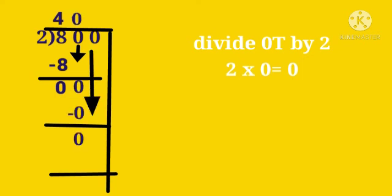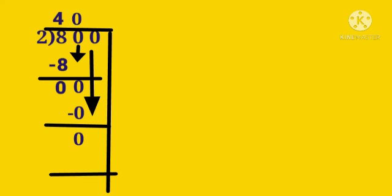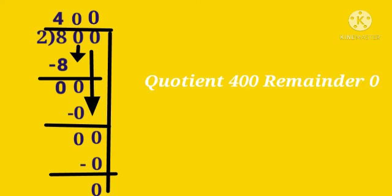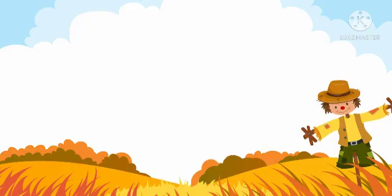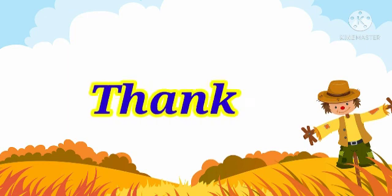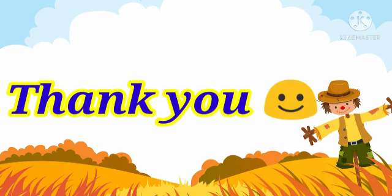Now, third, which number is left there? 0. Yes. Similarly, 0 unit divided by 2 is 0. So, let us write 0 in the unit place of the quotient. 0 minus 0? 0. So, the quotient is 400 and the remainder is 0. Okay, students. Understood now how you are going to do the division sum? I hope you have understood this chapter. Thank you.